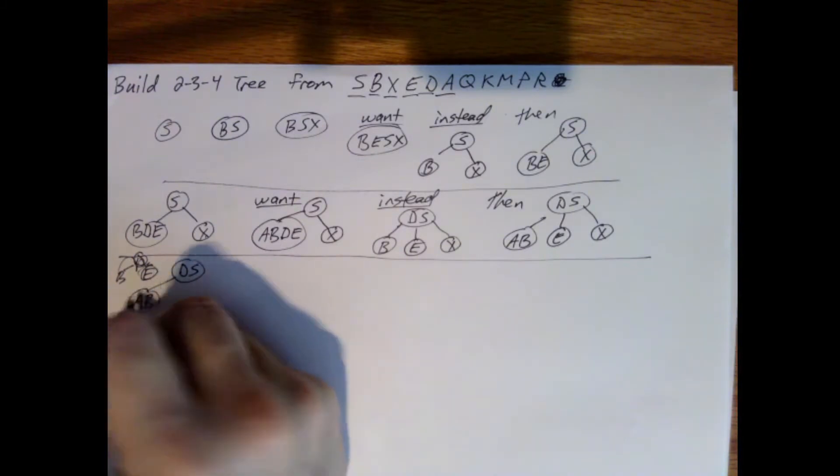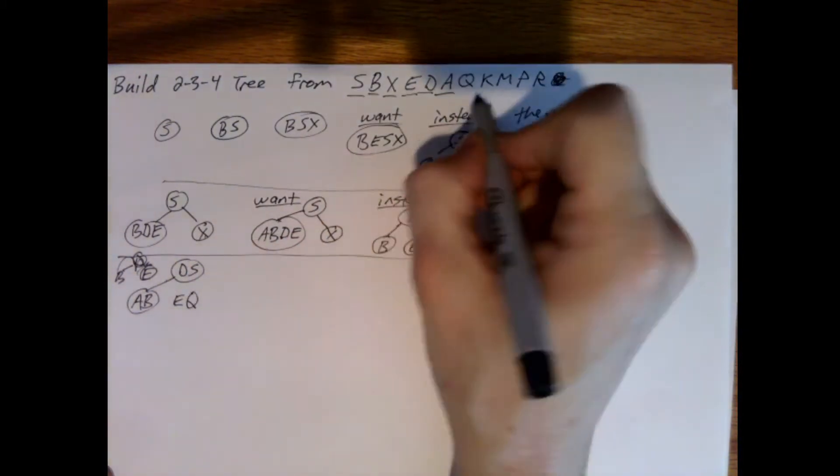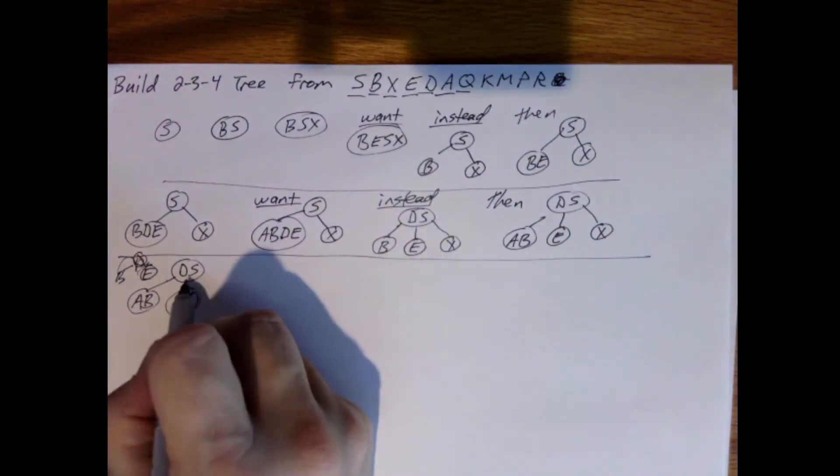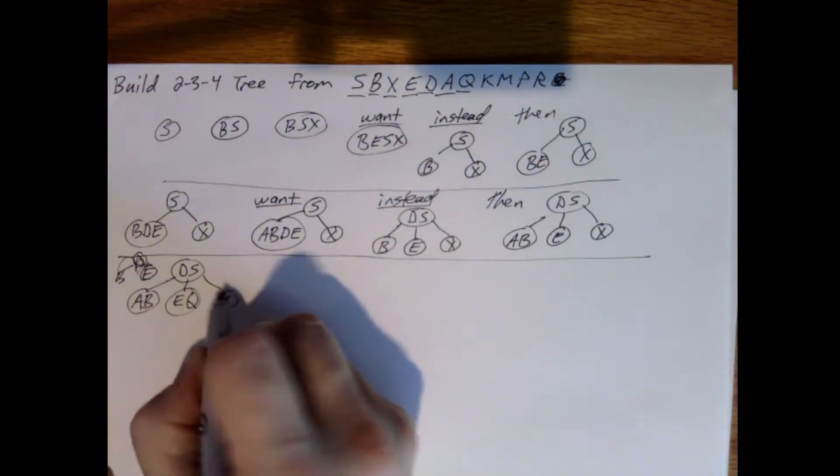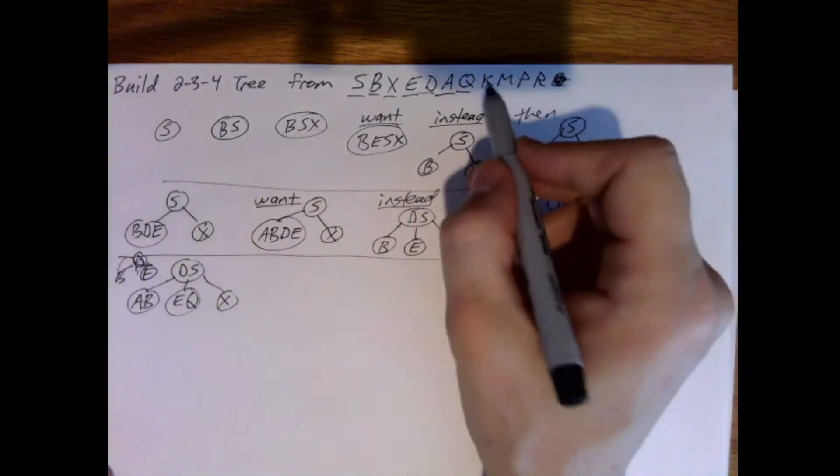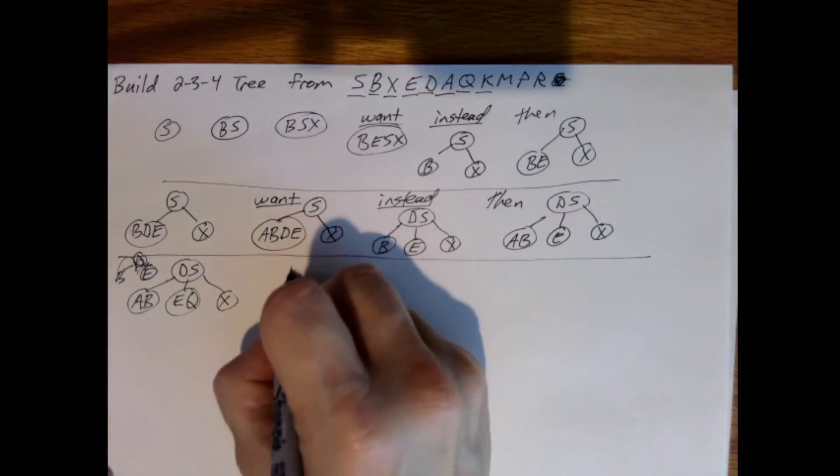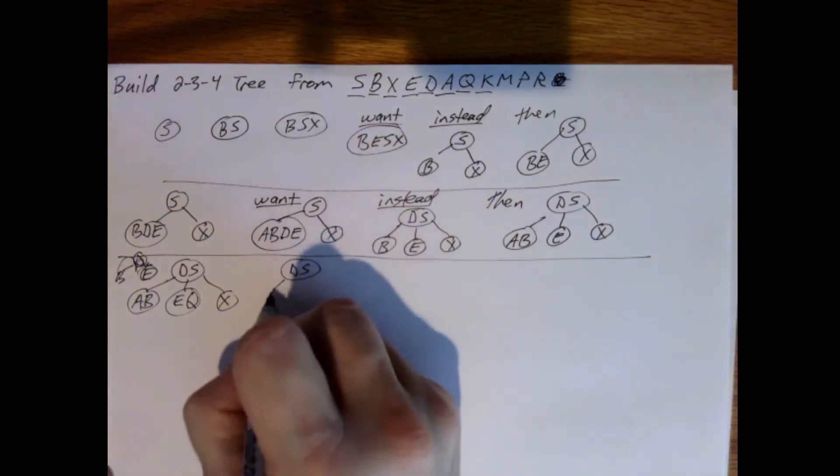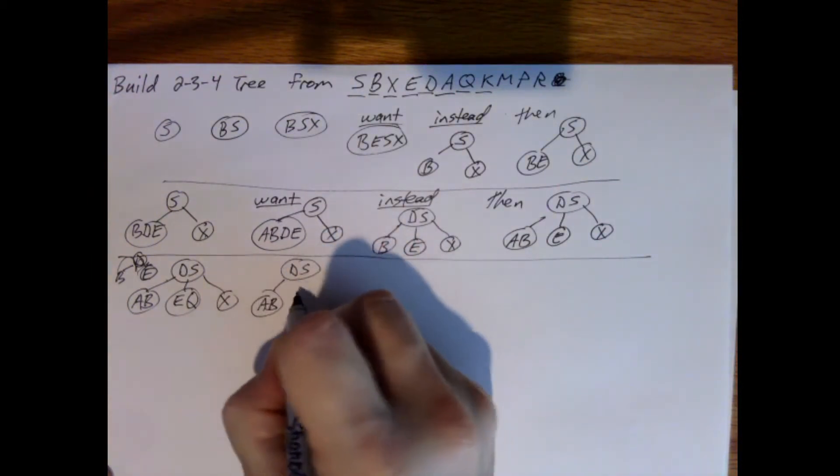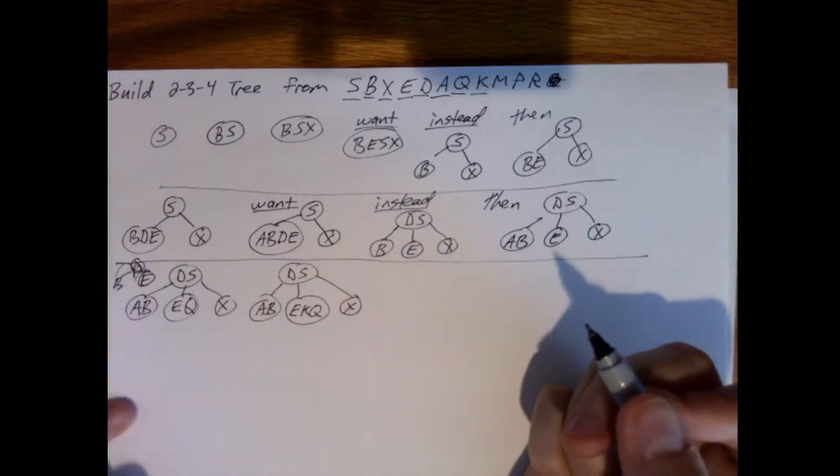A, B are both less than D. E, Q is between D and S. X is after S. We'll add K. That's also between D and S.